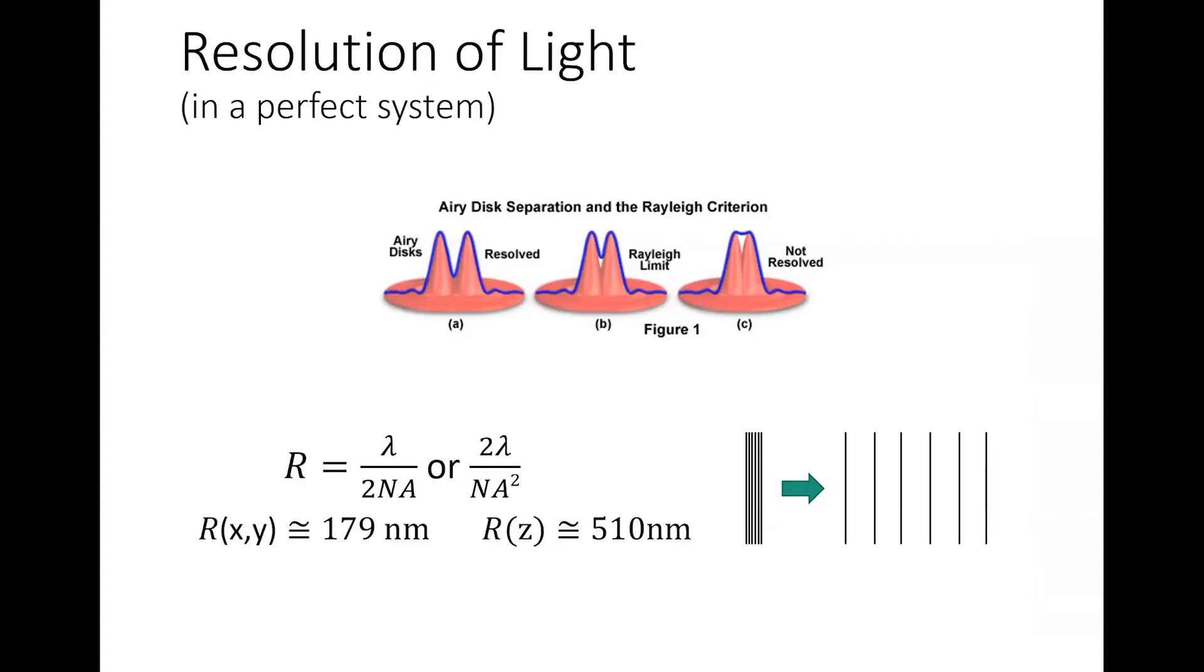The first thing to understand why we'd use expansion microscopy is the resolution of light. Resolution of light is dependent on the wavelength of the light used. In this example, we're going to use approximately 500 nanometers, which would be the emission of a GFP-like fluorophore. If we put that in for our wavelength of light divided by two times numerical aperture, we'll use a 1.4 numerical aperture objective. That would be an oil objective. This would give us an axial resolution of approximately 179 nanometers. In our lateral direction, which is always going to be more poor, we would have about 510 nanometers resolution.